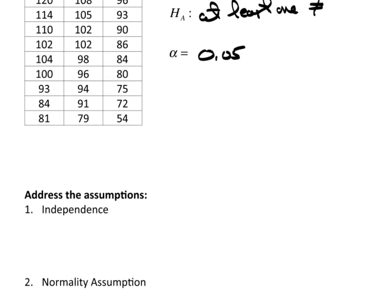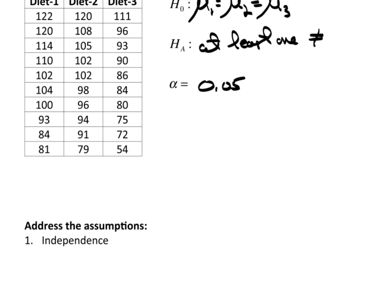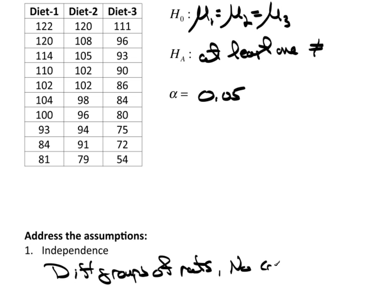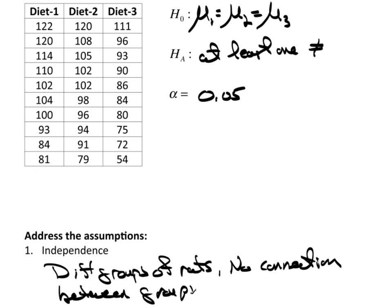Let's take a look at the assumptions. The first assumption is independence. Well, these are clearly independent — there are different groups of rats, and there's simply no connection between the groups. That's really sufficient to indicate independence.